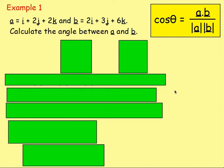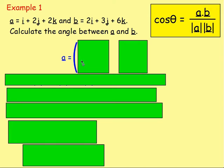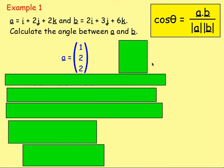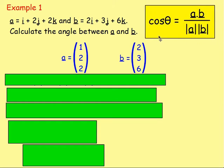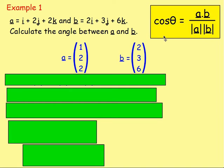Example one: a equals i plus 2j plus 2k, and b equals 2i plus 3j plus 6k. Calculate the angle between the vectors a and b. The first thing to do is write these vectors in component form. So vector a is going to be 1, 2, 2. For b, do the exact same thing — we've got 2i, 3j, and 6k, so in component form we'd have 2, 3, 6.